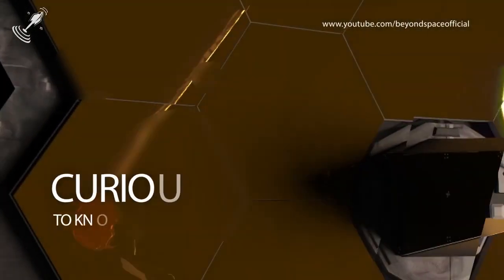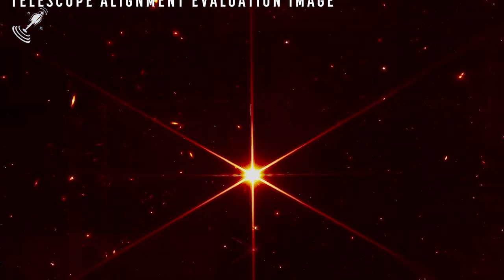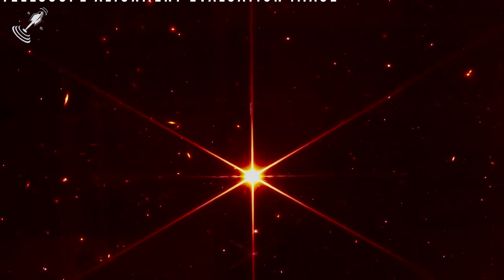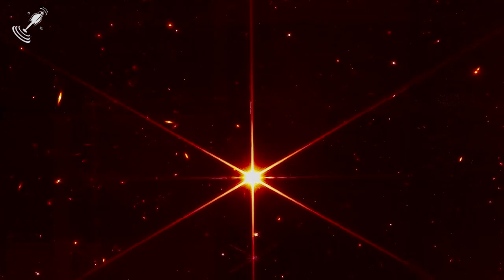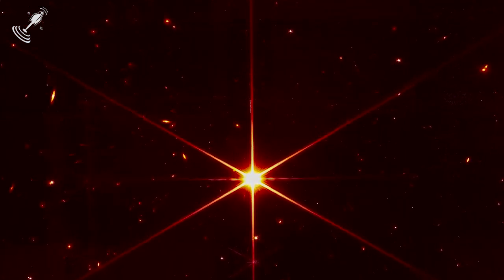Curious to know what this image was, and why it left the scientists in shock? Well, here it is. At first sight, what the JWST captured is a large star with a splattering of far smaller stars behind it. What's special about that, you might ask?